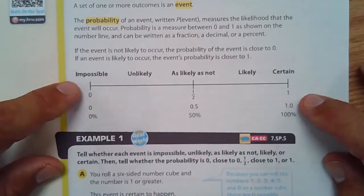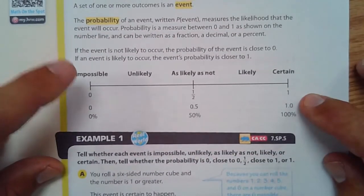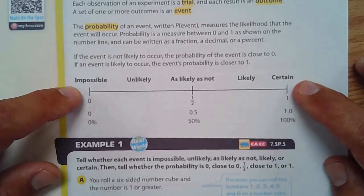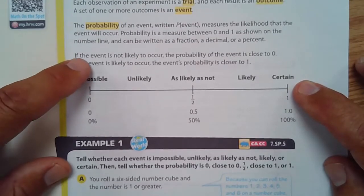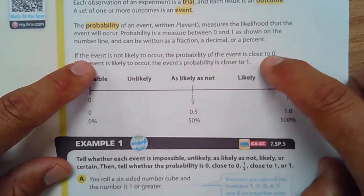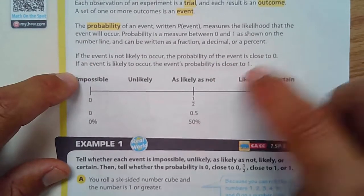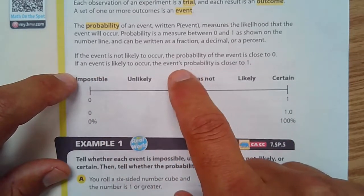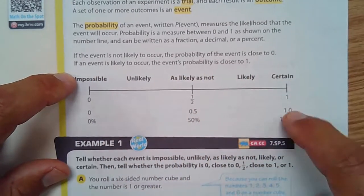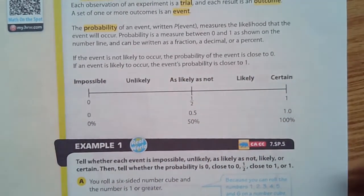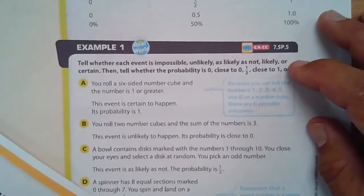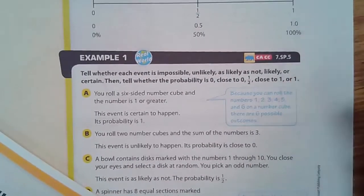Probability is a measure between zero and one, as shown on the number line — from impossible to certain. If the event is not likely to occur, the probability is close to zero. If the event is likely to occur, it's closer to one.